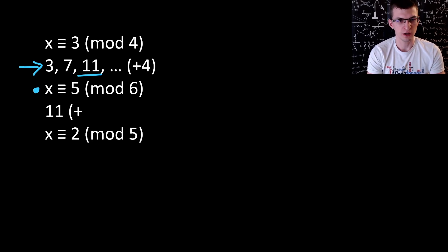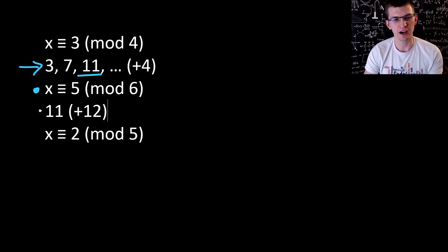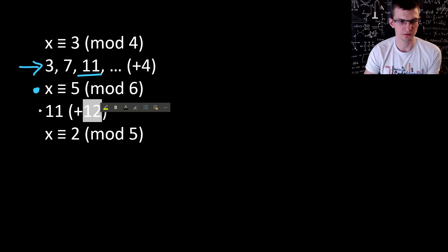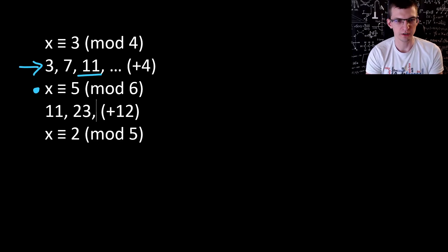Not the only one though. You can increase it by something divisible by all moduli so far — 4 and 6. The least common multiple, LCM, of that is 12, and if you add 12 to something, you don't change remainders modulo 6 and 4 because 12 is divisible by 6 and 4. So all solutions are 11, 23, 35 and so on.